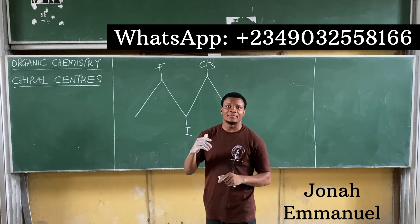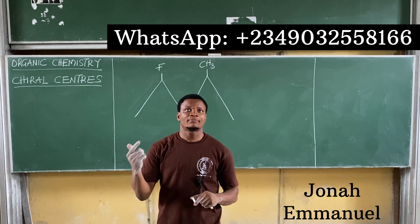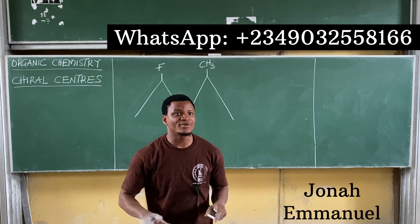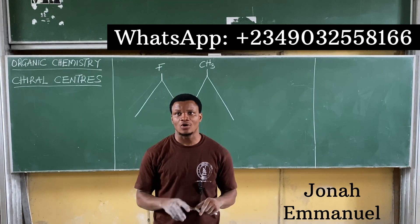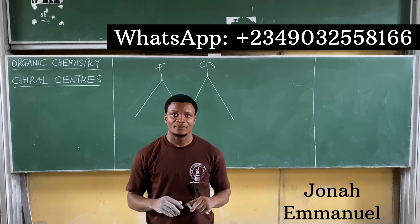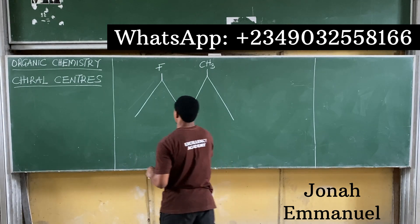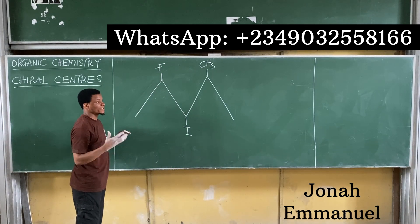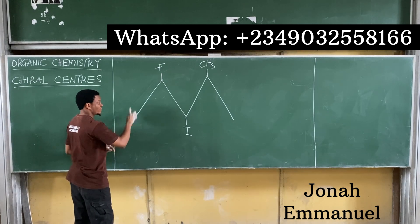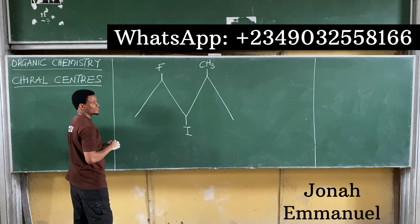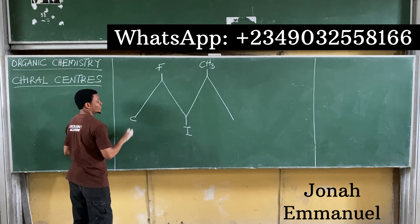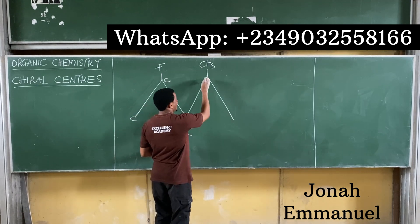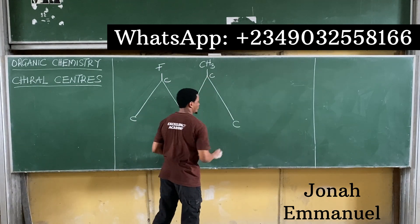Why? Because all primary carbons have three hydrogens on them. Having three hydrogens means you have three similar species or groups, so you cannot be a chiral center. Now let me use this example to explain. I will identify the carbon atoms by position: I have a carbon here — one, a carbon here — two, a carbon here — three, a carbon here — four, a carbon here — five.